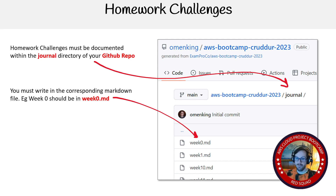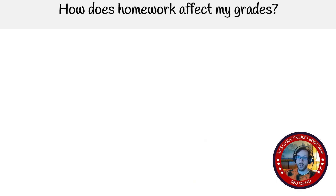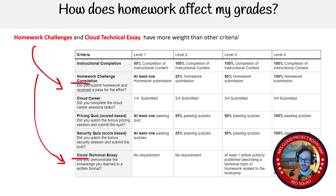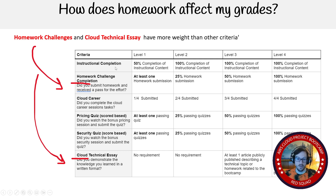Put it in the right file — don't rename these files because I'm going to click through onto those files. Looking at the grading rubric, I realized I need some weights because I treat some things bigger than others. If you get level fours in everything, that doesn't mean you get red squad. If everyone's at level four, I have to choose who will be red squad and who will not. The big differences are going to be the cloud technical essay and homework challenge completion — homework challenge completion has more weight than anything else. All the other stuff — instructional completion — I just expect everyone to do this.